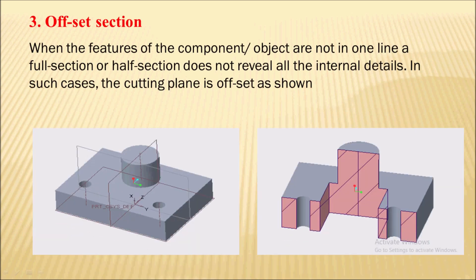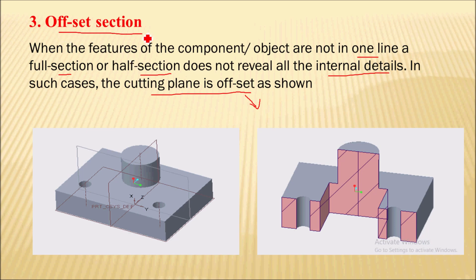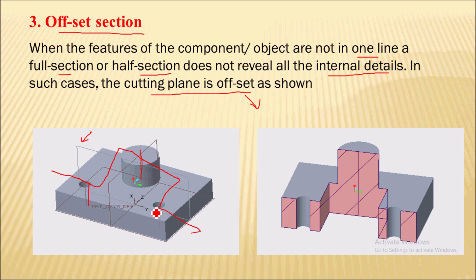Next is the offset section. When the features of the component are not in one line, a full section or half section is not sufficient to show the internal details. In such a case, we offset the cutting plane, and that is called the offset plane. Here you can see a 3D model with a plane passing through the axis of the cylindrical portion. After cutting by this plane, only the internal detail for the cylindrical portion is visible, but not for the holes. So we draw an offset section passing through the center of the two holes as well as the center of the cylindrical portion. That is called the offset section.